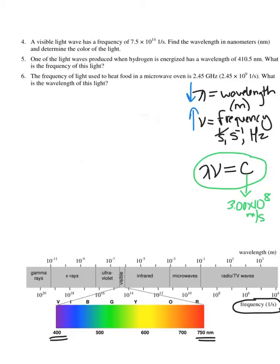What's important to note is that c is in units of meters per second. So in order to use that c, I need to make sure that the wavelength is recorded in meters and that the frequency is in one over seconds or hertz, so that when I multiply those two units together, I get meters over seconds, which matches the units of c. So you might have a conversion to do before plugging into this equation, or a conversion after if the question asks for units other than what you solve for.